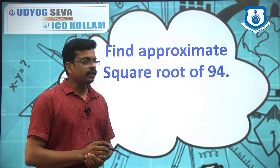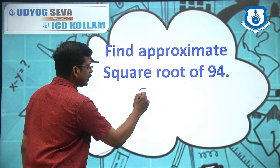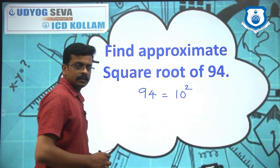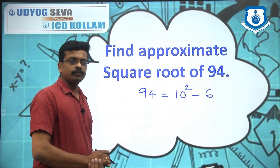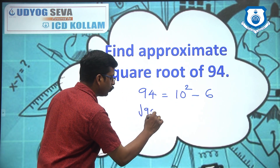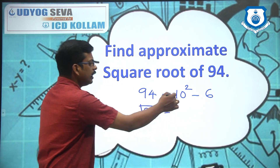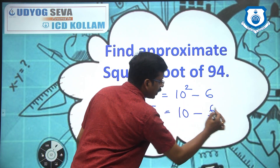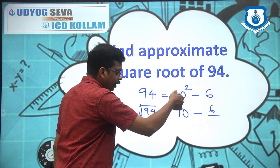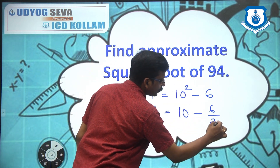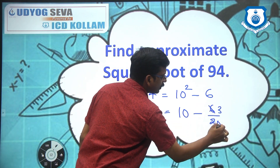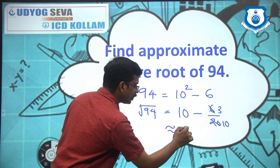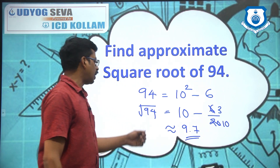Now we are going to find square root of 94. You know that 94 is equal to 10 squared, which is 100, minus 6. So to find square root of 94, you know it is 10, then minus 6 divided by the product of these two numbers: 10 times 2 is 20. This gives 6 divided by 20, which is 0.3. So 10 minus 0.3 is 9.7 — the approximate value of root 94.